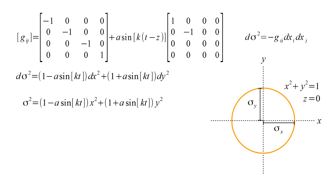Plugging in x equals one, y equals zero, we get that sigma x equals square root one minus a sine k t. Since a is small, an excellent approximation to the square root is one minus one half a sine k t. For x equals zero, y equals one, we get sigma y equals one plus one half a sine k t.